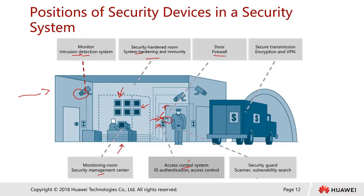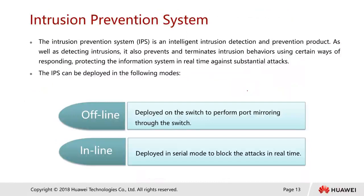We also have a security guard — someone who constantly moves around the premises or office, trying to detect any vulnerabilities or suspicious persons walking in the building. Then we have secure transaction encryption and VPN tunnels — this is like an armored truck carrying secret information or cash from one place to another. Those are examples from the real world.